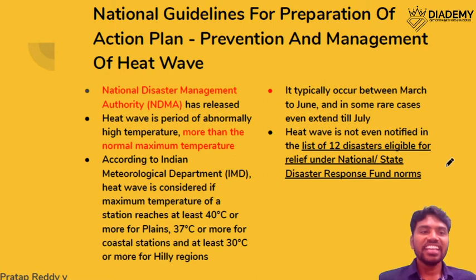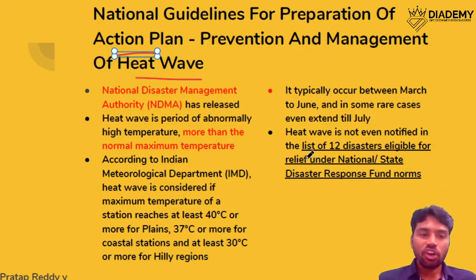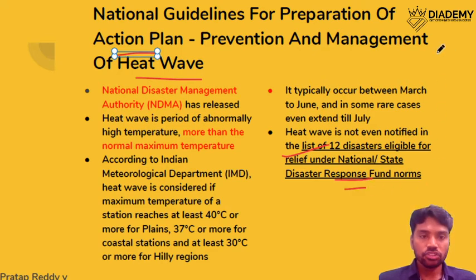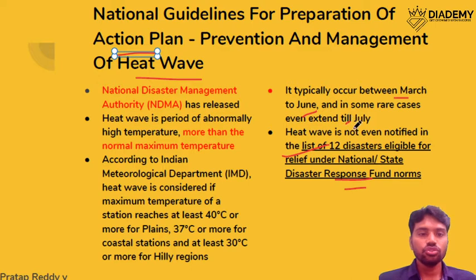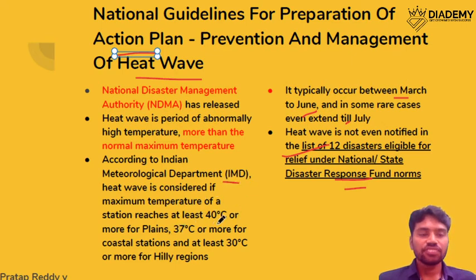The next topic is National Guidelines for the Preparation of an Action Plan regarding Heat Wave. Please remember Heat Wave is not under the list of 12 disasters in the Disaster Response Fund norms. Heat Wave generally occurs between March to June and extends to July. It is defined by IMD: if the temperature reaches 40°C in plains, 37°C in coastal areas, and 30°C in hilly areas.